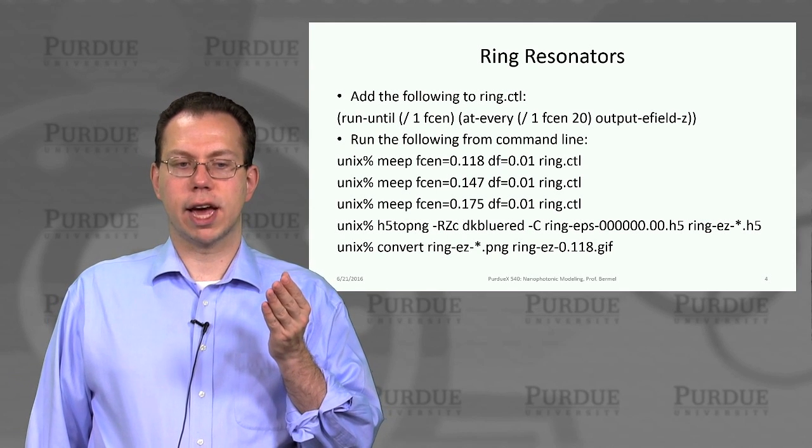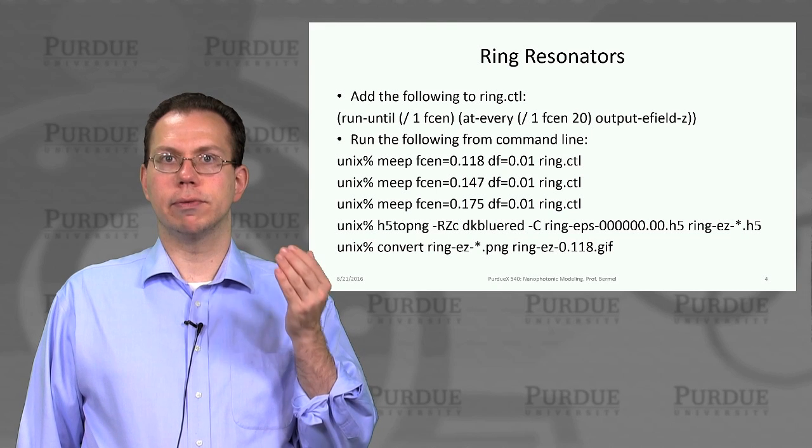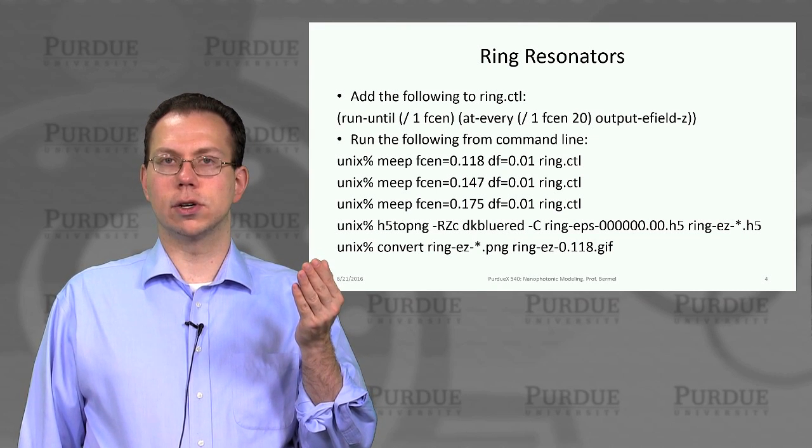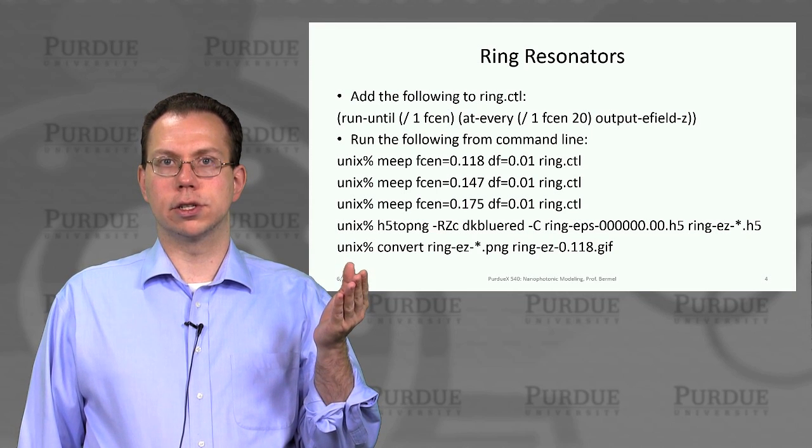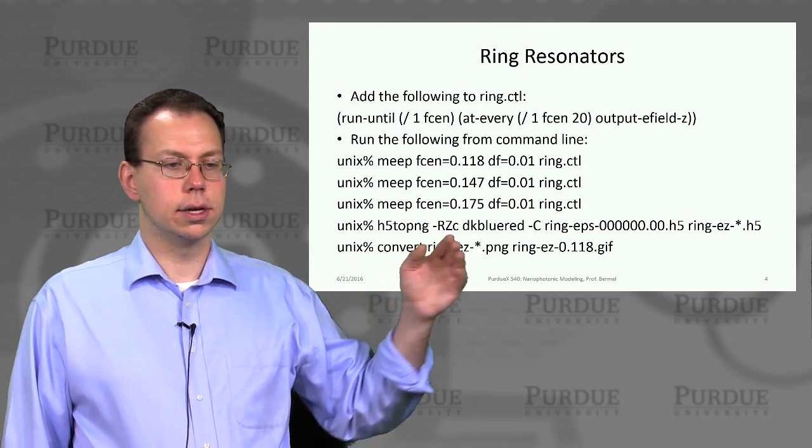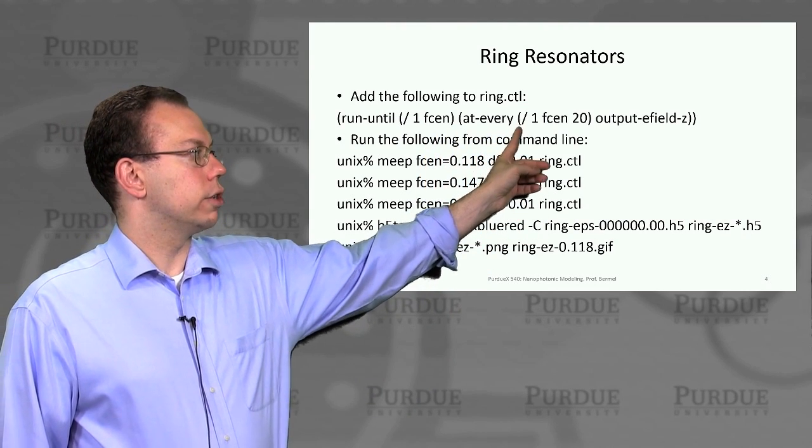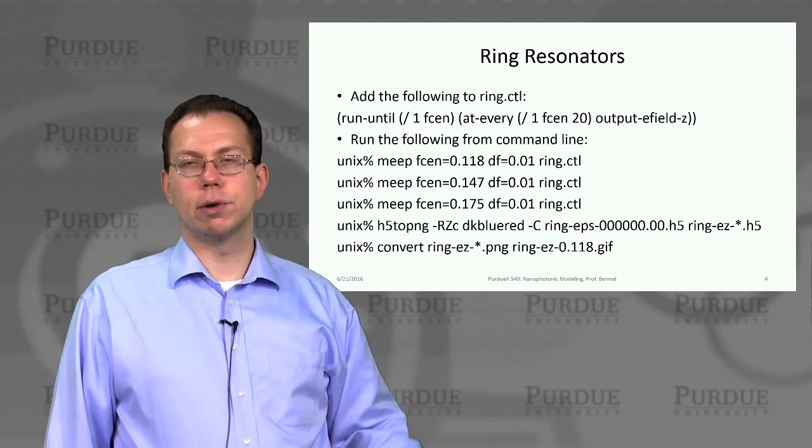In order to capture the output of the rings more precisely, we can actually add some extra code. It's basically just a single line which we can put into the default control file ring.ctl. It tells you to run every 20th of a time step or 20th of a period and output the E field.